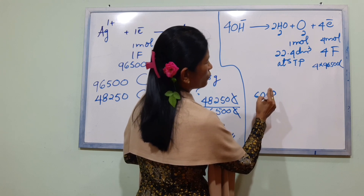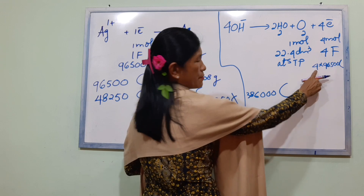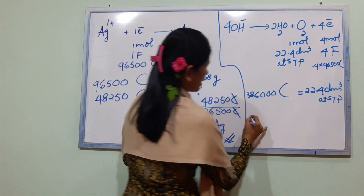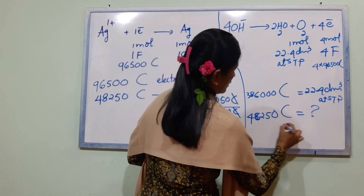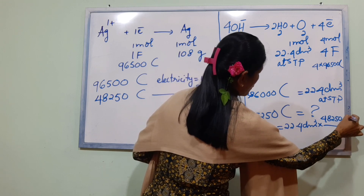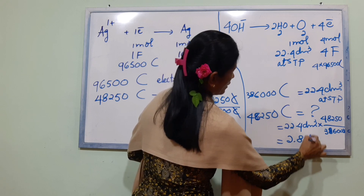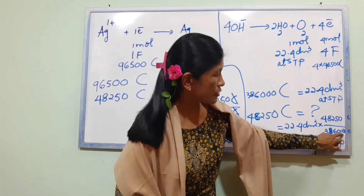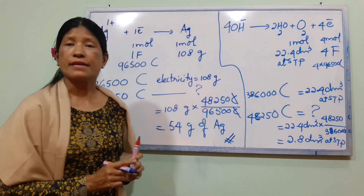Calculating volume of O₂: V = (22.4 dm³ × 48,250) / 386,000 = 2.8 dm³ at STP.